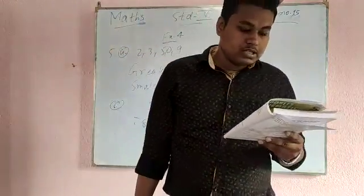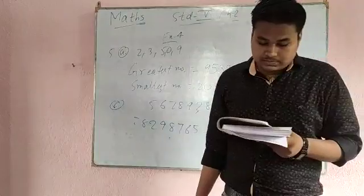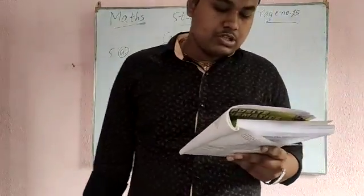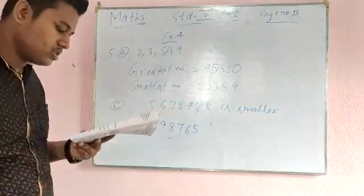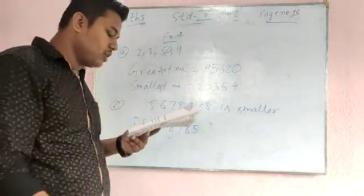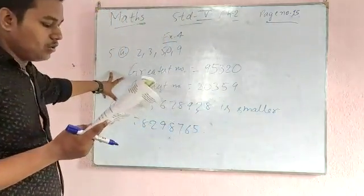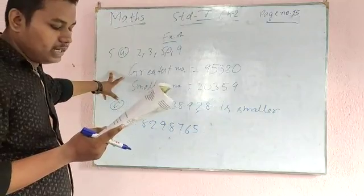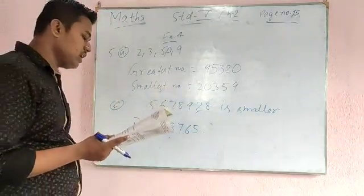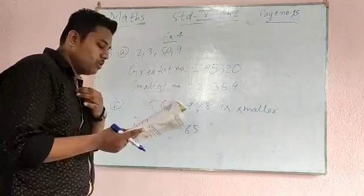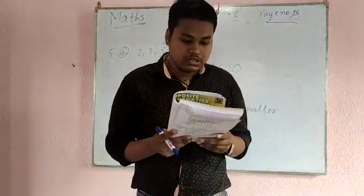Question number 7: write any number of 8 digits using 0, 2, 4, 5, 6, 7, 1 only once, and write the smallest and greatest number — same as question number 5. Question number 9 and 10 are also the same as question number 5. So with the help of question number 5, you will solve questions 8, 9, and 10.